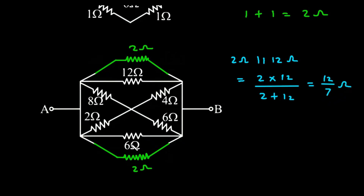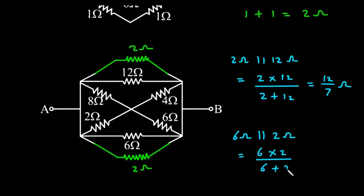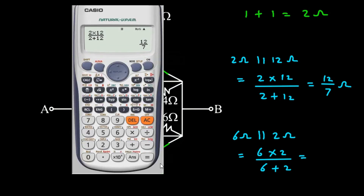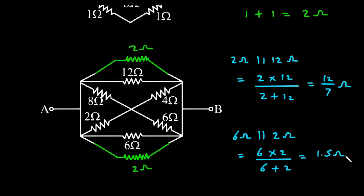And here, this 6 Ohm parallel with 2 Ohm — so 6 Ohm parallel with 2 Ohm will be 6 into 2 divided by 6 plus 2, which is simply 3 by 2, or we can write 1.5 Ohm. Here we are keeping this fraction to get the precise answer.